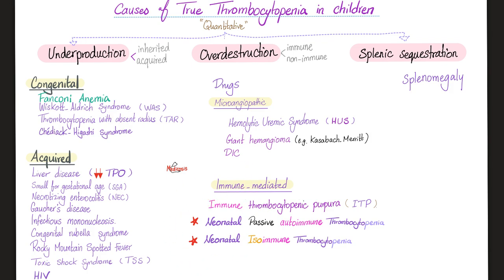Today we're talking about two diseases: neonatal passive autoimmune thrombocytopenia and neonatal isoimmune thrombocytopenia. I will tell you the difference shortly.